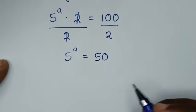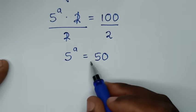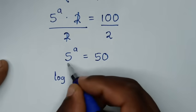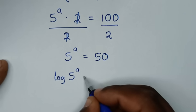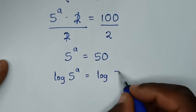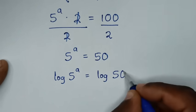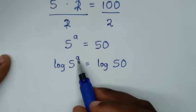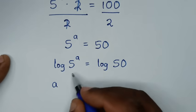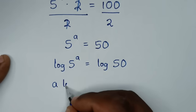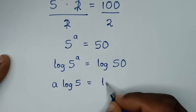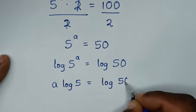In the next step we'll apply log on both sides, so it will be log of 5 power a is equal to log of 50. Then this power a will move to the front, so it will be a times log of 5 is equal to log of 50.